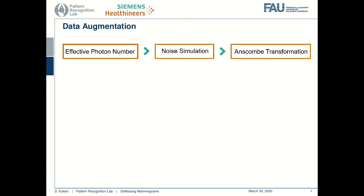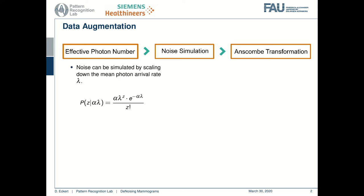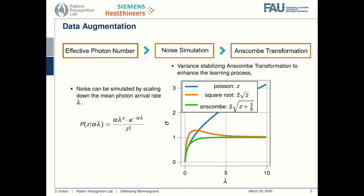To obtain training data, a physically motivated noise is simulated on X-rays with good image quality. This was achieved by scaling down the mean photon arrival rate and applying the Anscombe transformation to stabilize the variance, transforming the noise to signal-independent white Gaussian noise and therefore enhancing the learning process.